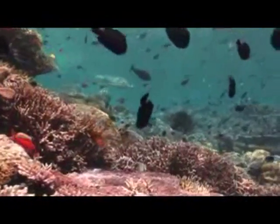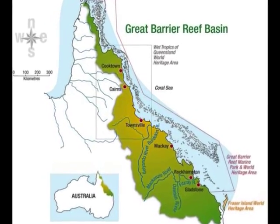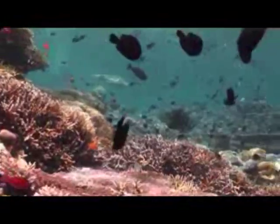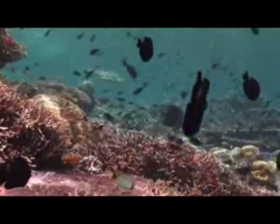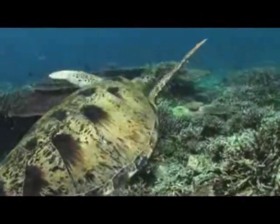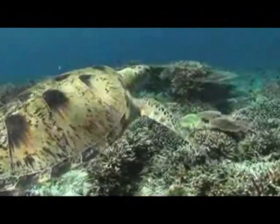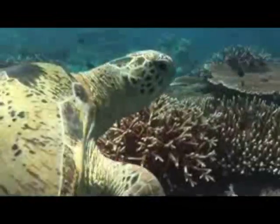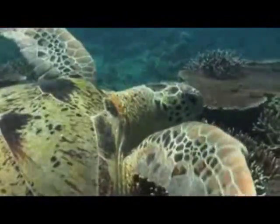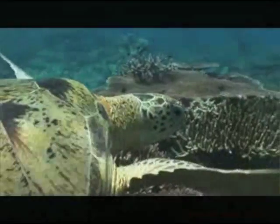Australia's iconic Great Barrier Reef is located off the coastal waters of Queensland. The Great Barrier Reef is a World Heritage listed marine park and is home to an array of stunning marine life and diverse ecosystems. However, the health and conservation of the Great Barrier Reef is under threat.